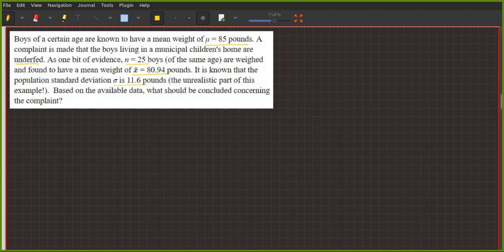The population standard deviation is given, but it is usually the same. In real life scenario, it is given, it is very difficult. But the concept is developed. Based on the available data, what should we conclude concerning the complaint?